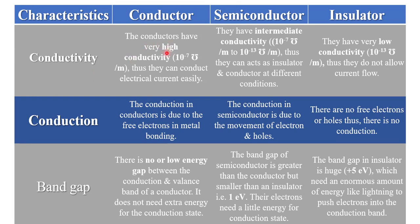Now conductivity: the conductivity of a conductor is very high, approximately 10 raised to the power −7 S/m, so they can conduct current easily. Semiconductor conductivity is intermediate, between 10⁻⁷ to 10⁻¹³ S/m, so they can act as either insulator or conductor under different conditions. The conductivity of an insulator is very low, about 10⁻¹³ S/m, so they do not allow current to flow. Regarding conduction mechanism: conduction in a conductor is due to free electrons in metallic bonding. Conduction in a semiconductor is due to the movement of electrons and holes. There are no free electrons or holes in an insulator, so there is no conduction.